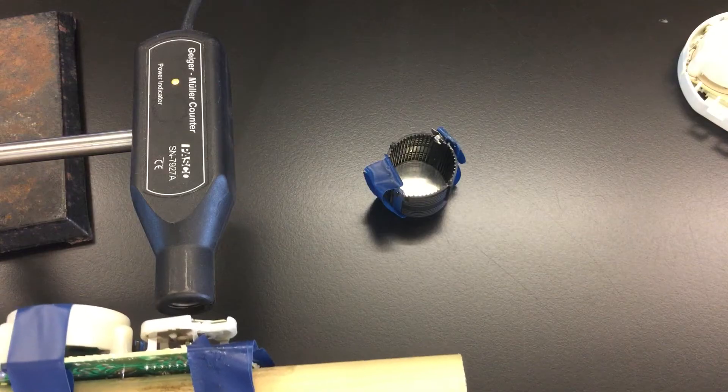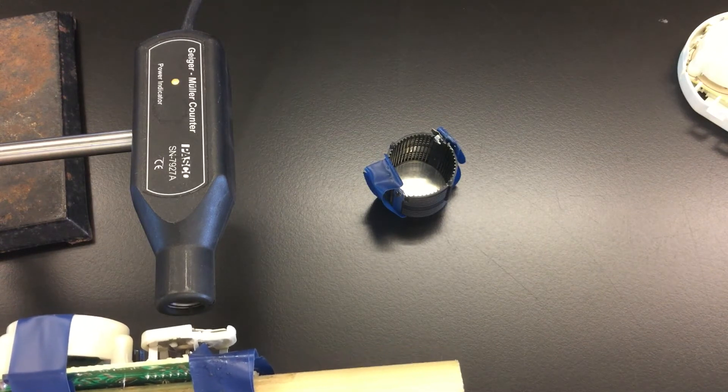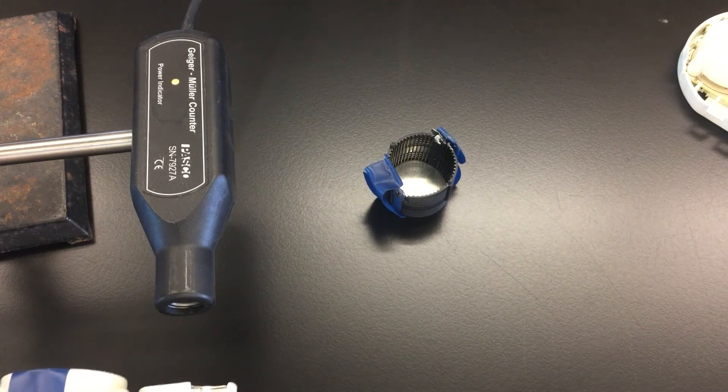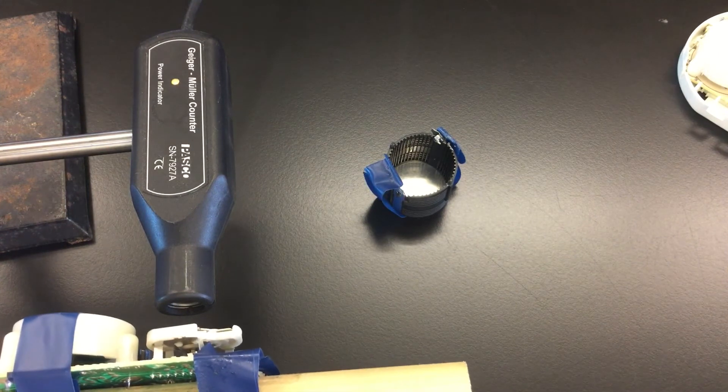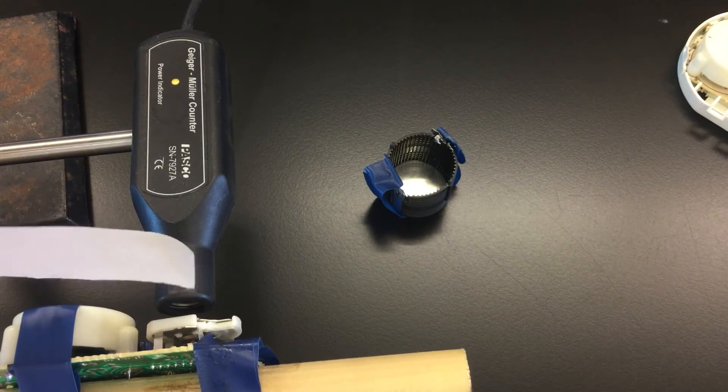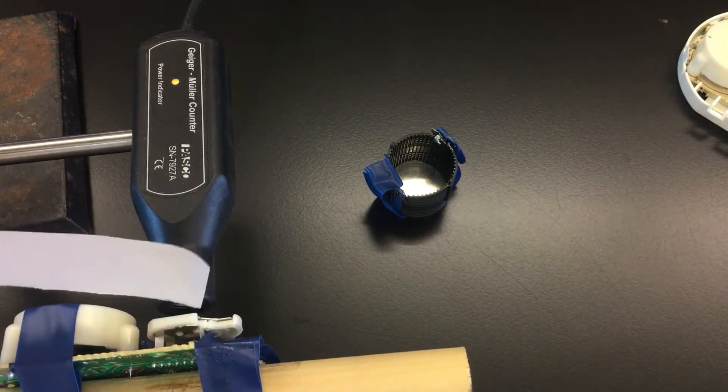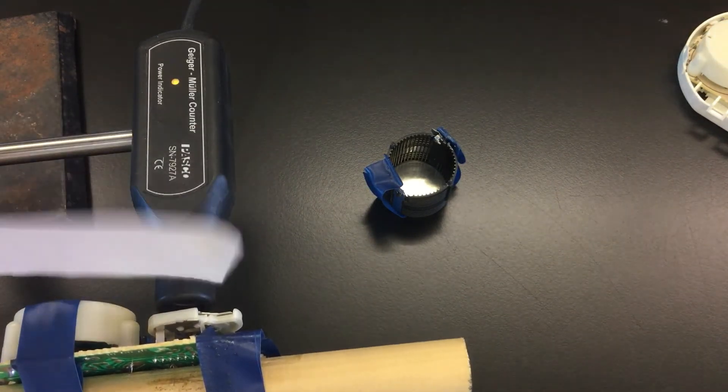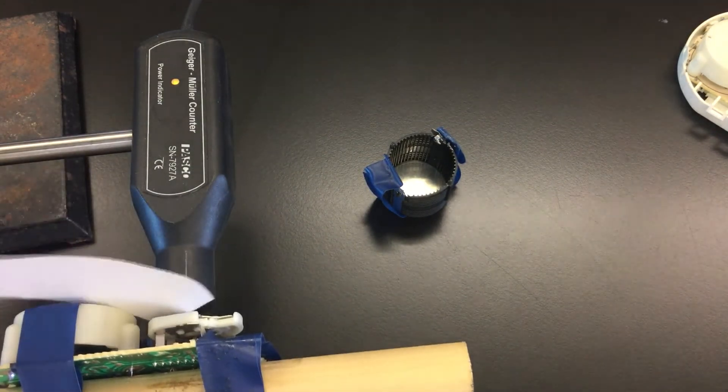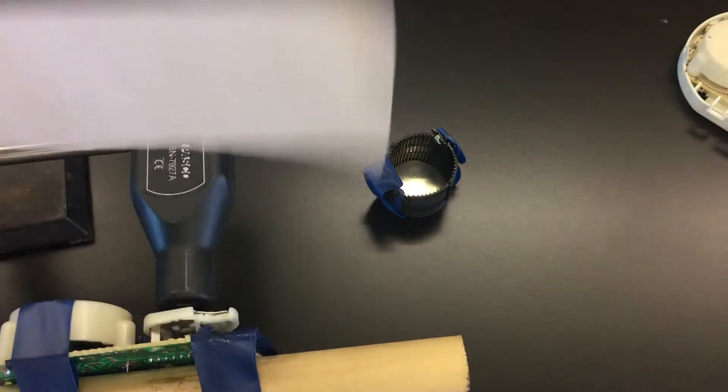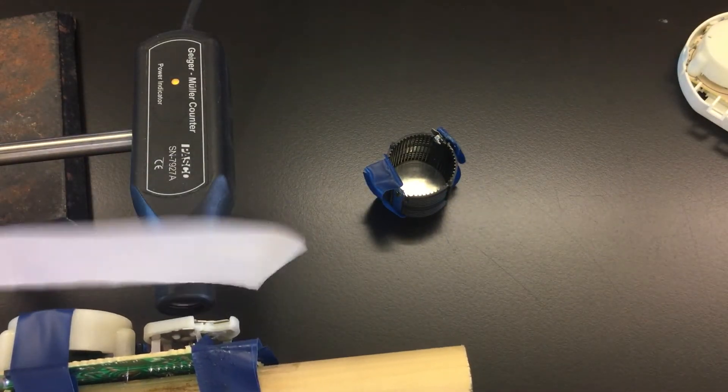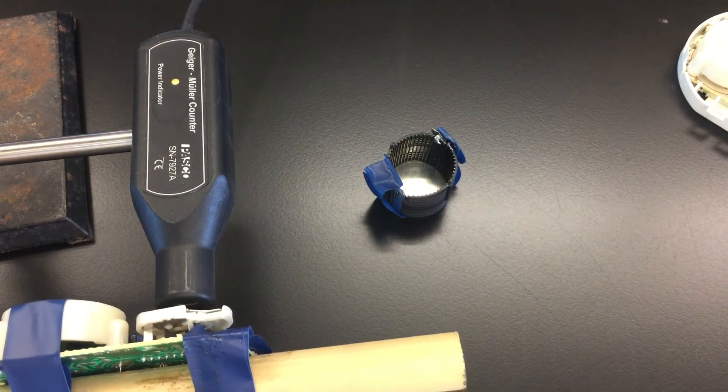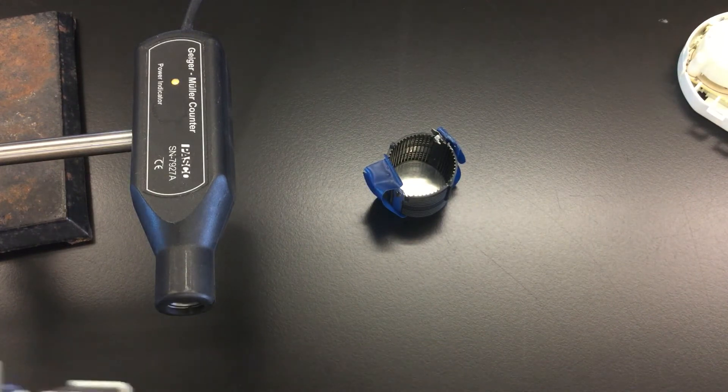I want you to notice, besides the decrease in counts when I back up, also notice if I put this piece of paper between the americium and the Geiger counter. Now I'll pull the paper out, now put the piece of paper back in. This alpha radiation is pretty easily blocked by just a sheet of normal paper.